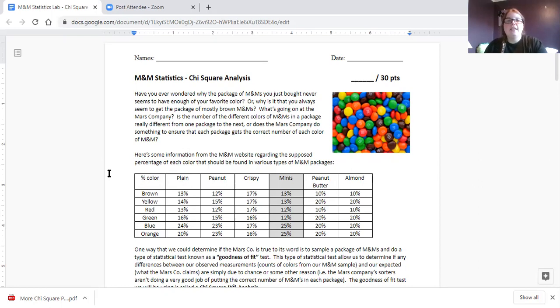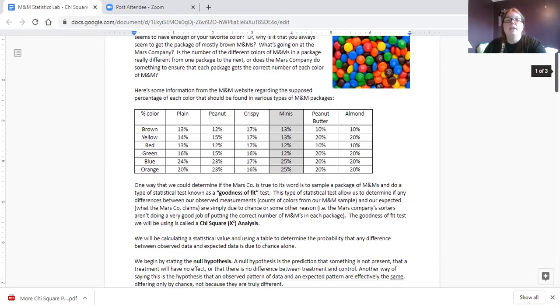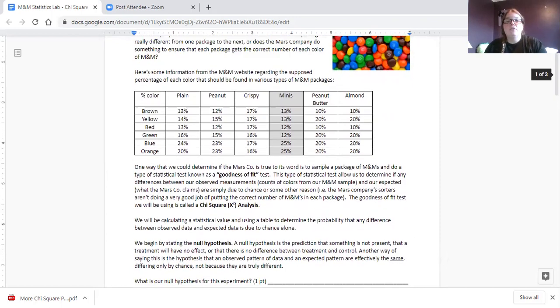So on your lab sheet, it says, have you ever wondered why the package of M&Ms you bought never seems to have enough of your favorite color? Or why is it that you always seem to get the package of mostly brown M&Ms? What's going on at the Mars company? Is the number of the different colors of M&Ms in a package really different from one package to the next? Or does the Mars company do something to ensure that each package gets the correct number of each color of M&M? So this information in this chart is reported by Mars, which is the company that makes M&Ms. So one way we could determine if the Mars company is true to its word is to sample a package of M&Ms and do something called a goodness of fit. So that is what we're doing with our chi-square analysis is we're seeing if the data fits with our expected values.